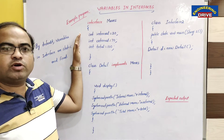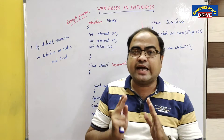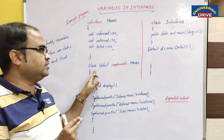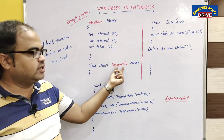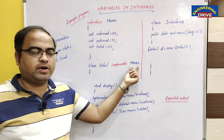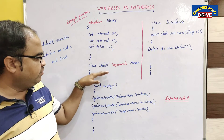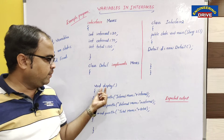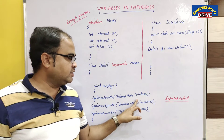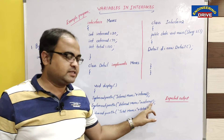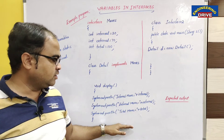Even though I have not used the final keyword, by default all these three variables will be static as well as final. Now, because only an interface cannot do the job, we need to use a class. That class should implement this interface using the implements keyword. So class detail implements marks. Here I have defined one method display, which is a normal method that class detail has implemented. And in this I am displaying the marks: internal marks, external marks and total marks.